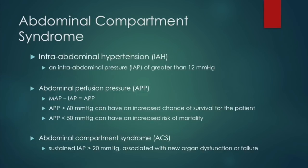Increased pressures within the abdominal cavity are called intra-abdominal hypertension. This develops when there's an intra-abdominal pressure (IAP) of greater than 12 millimeters of mercury. The normal abdominal perfusion pressure is measured by taking your mean arterial pressure and subtracting the intra-abdominal pressure. APPs greater than 60 have an increased chance of survival, while APPs of 50 or less have an increased risk of mortality.